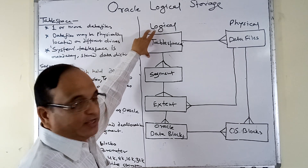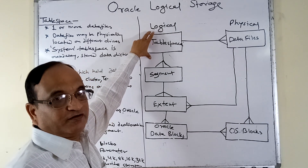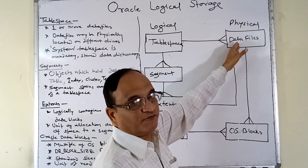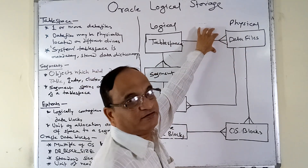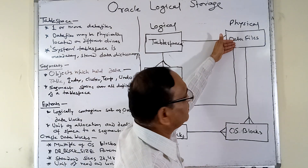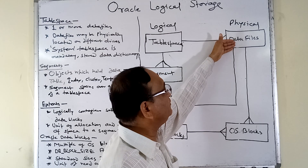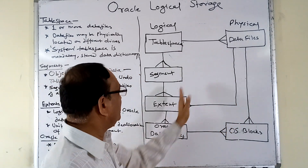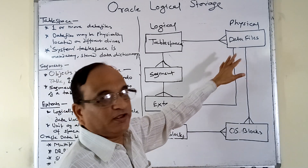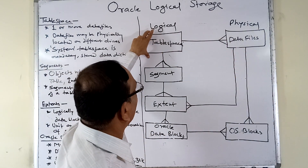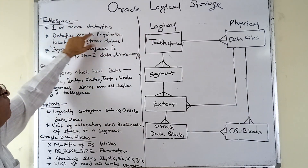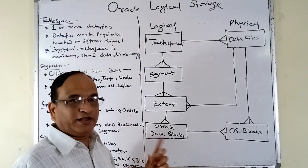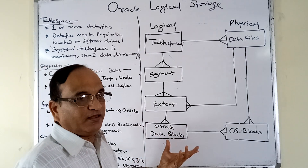As far as logical storage is concerned, first comes the tablespace. The tablespace is basically defined as the group of data files, and you can see there is a profile here which relates a tablespace with many data files — a one-to-many relationship. The data files, covered in detail in the physical storage lesson, consist of OS blocks and extents. One tablespace might contain a minimum of one data file and a maximum of up to 1024 data files.